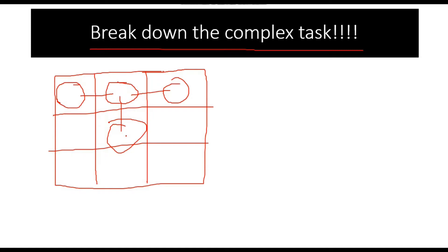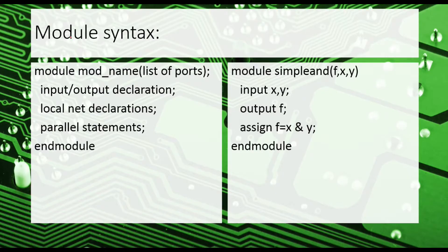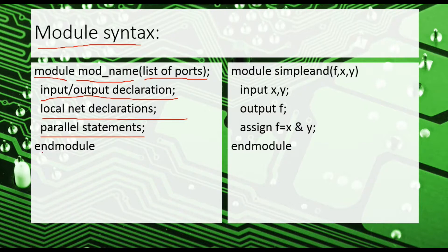Okay, so let's take an example to learn about the concept of modules. Friends, let us firstly see the syntax of our module. First of all we write module, then the name of module, list of ports. List of ports basically means what will be the input and what would be the output. We need to write all the names which will be the input and what will be the output. Then we do input-output declaration, then we do local net declarations, then we write the parallel statements, and then at the end we write endmodule.